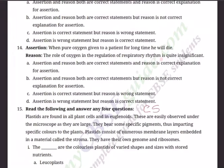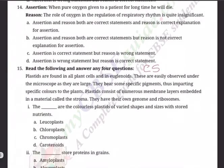Question 15 is the new pattern — Case Study (CS). About a concept, there will be one paragraph. You have to read it carefully, analyze the important points, and then answer any four out of the five questions below. Pick the easy ones you understand from the paragraph. The paragraph reads: Plastids are found in all plant cells and in euglenoids. They are easily observed under the microscope as they are large.